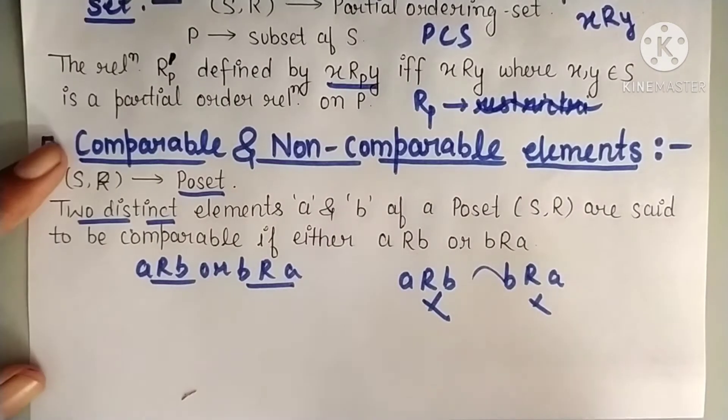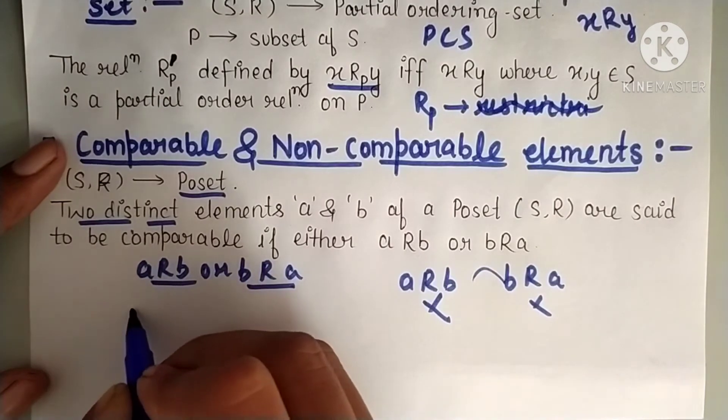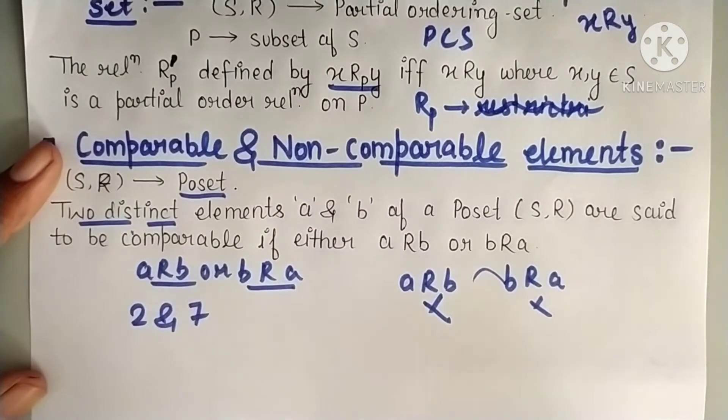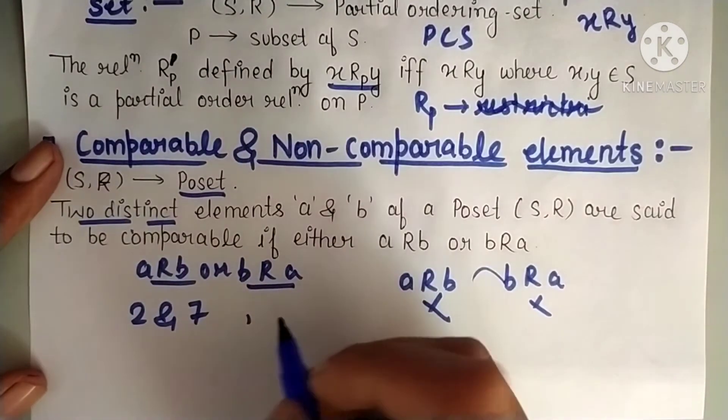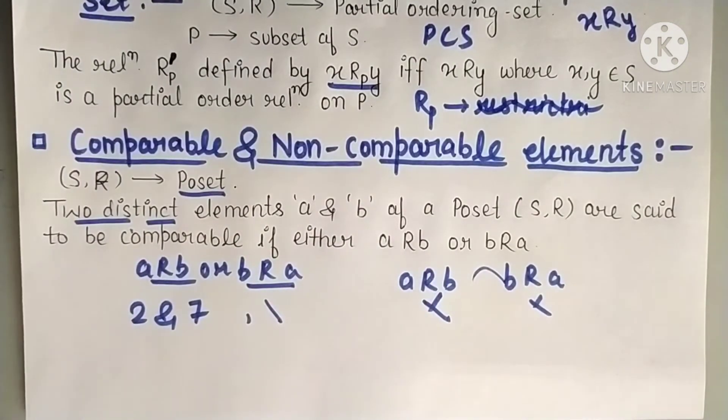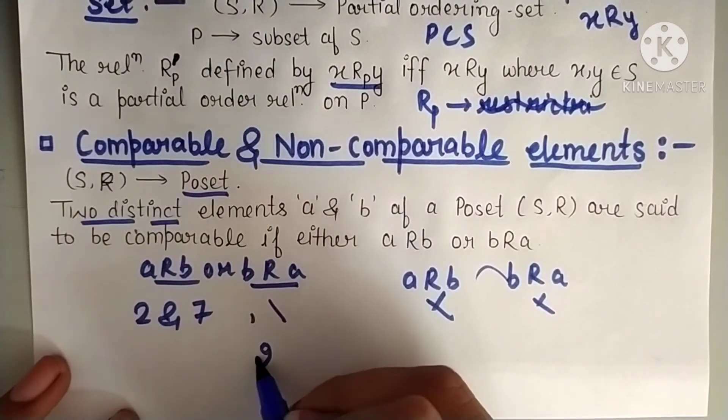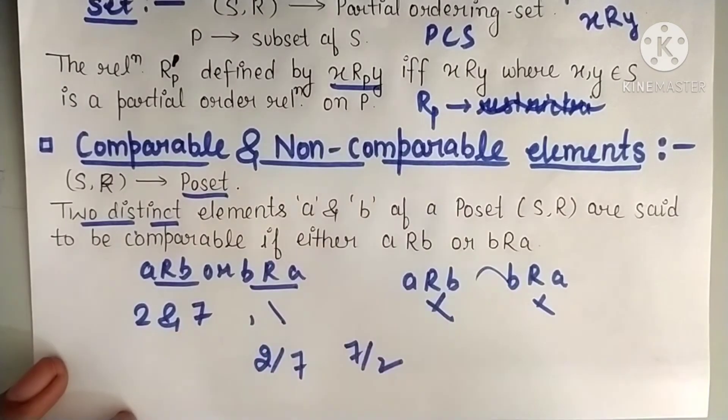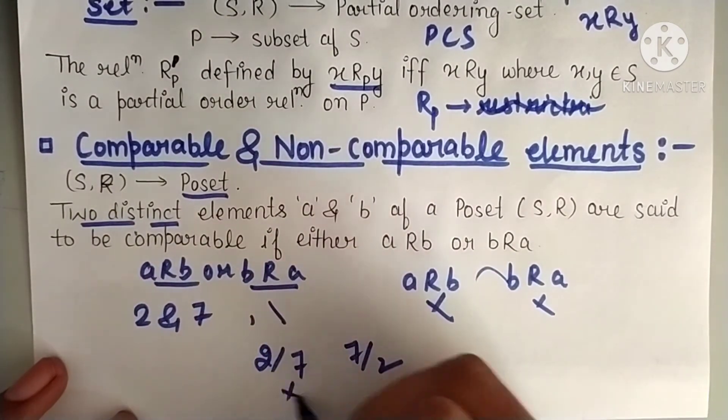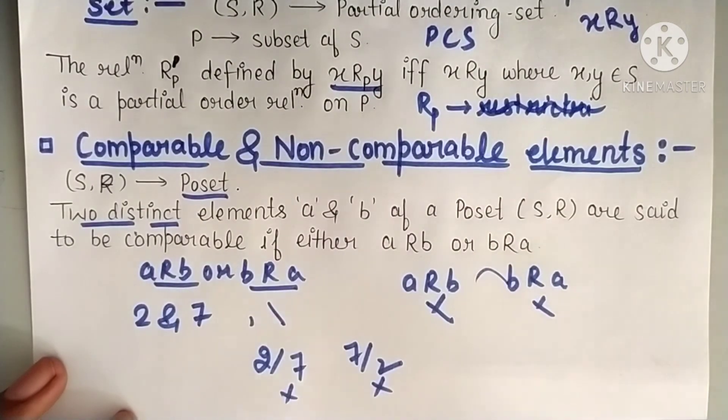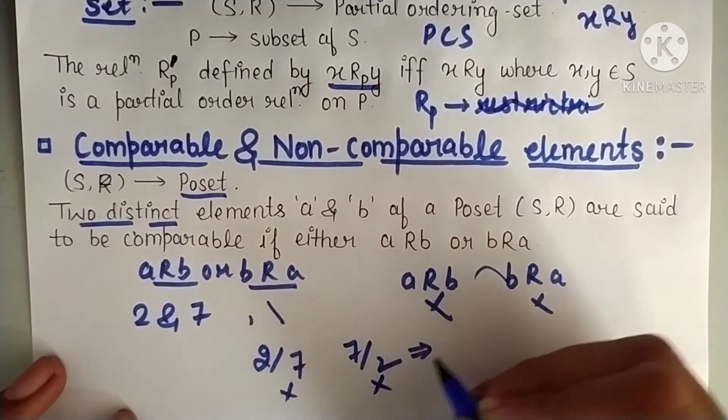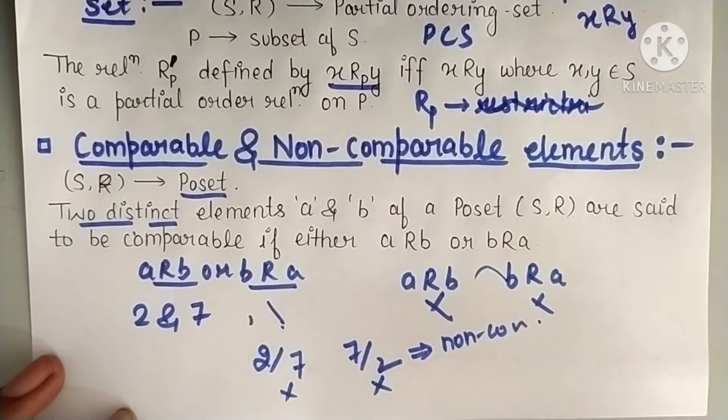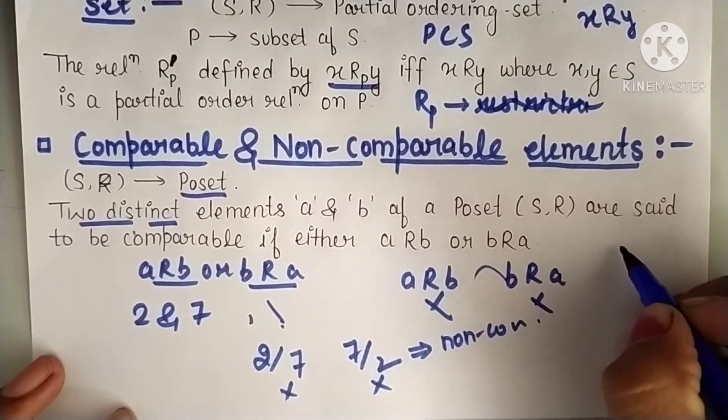Let's see an example of this. If I write elements 2 and 7, and relation is divisibility. Now tell me, does 2 divide 7, or does 7 divide 2? Neither holds. Neither 2 divides 7 nor 7 divides 2. So this implies these elements are non-comparable. For which relation? For divisibility.